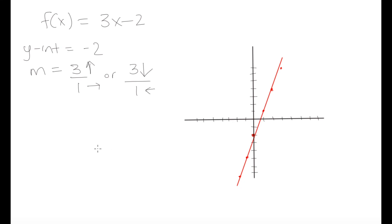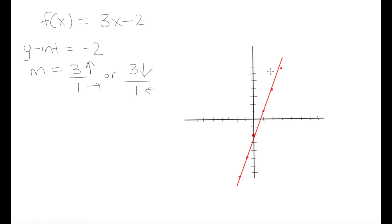We have a few additional methods to sketch graphs of linear functions much faster than plugging in multiple values for x and calculating y coordinates. We can graph functions by determining our y-intercept and slope, or our x and y-intercepts and joining them, or knowing our x-intercept and slope. Knowing any two of these pieces of information allows us to graph linear functions easily and quickly.